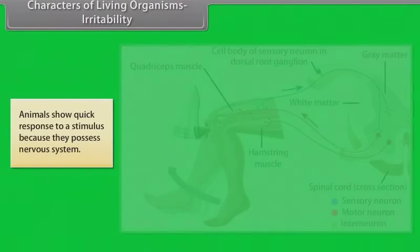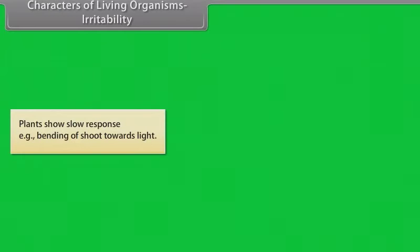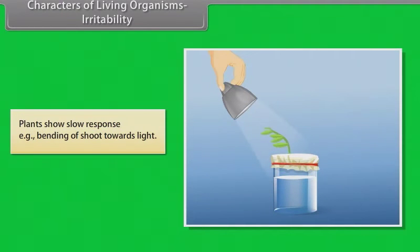Animals show quick response to a stimulus because they possess a nervous system. Plants show slow response. Example: bending of shoot towards light.